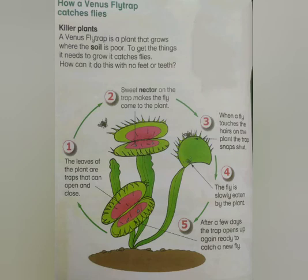Now let's finish up by looking at how a Venus flytrap works — it's a killer plant. The Venus flytrap is a plant that grows where the soil is poor, so bad soil. To get the things it needs to grow, it catches flies. How can it do this with no feet or teeth? Let's take a look.